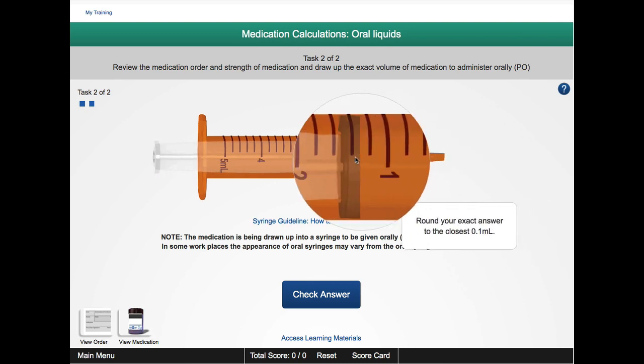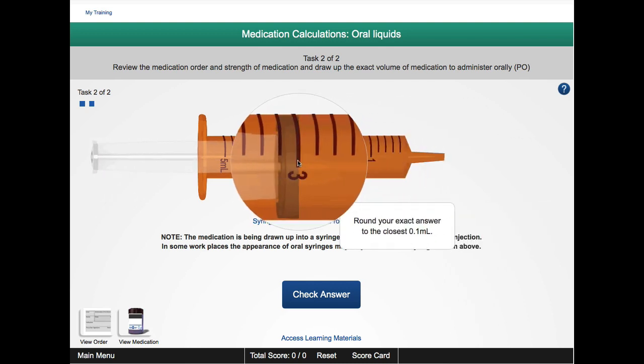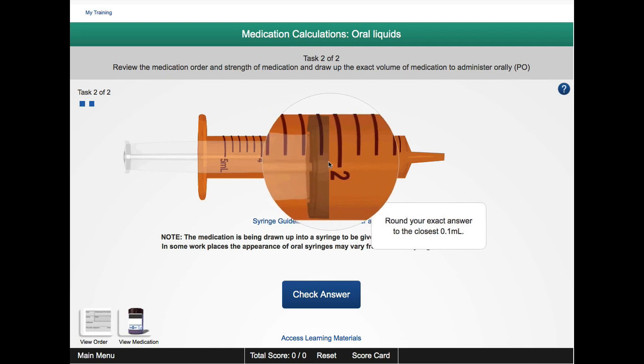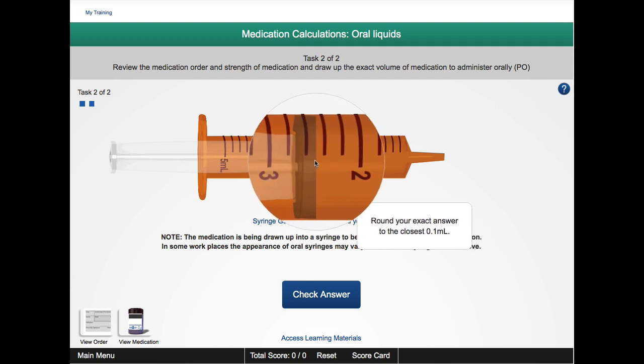As you left click on the plunger and move it, you'll notice that there are black lines every 0.2 mils. There are four black lines between two and three, meaning that each one is spaced at 0.2 mil increments.